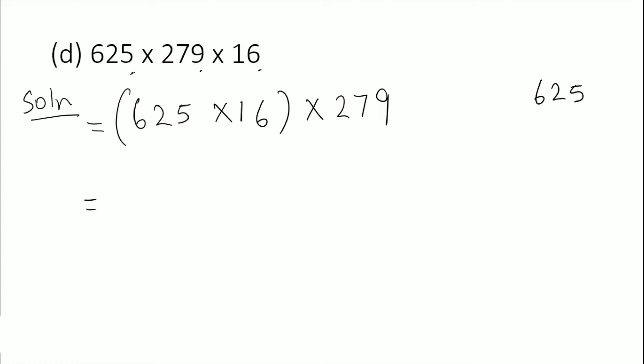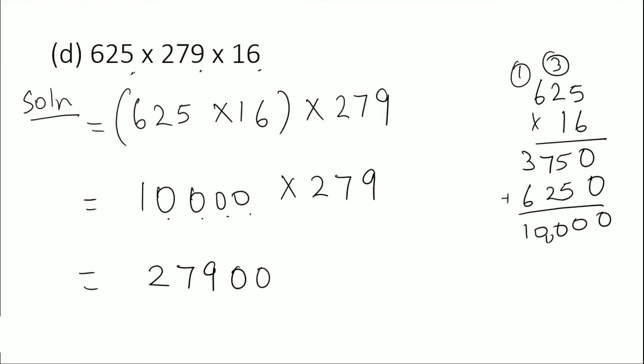Let's do the rough work: 625 times 16 equals 10,000. So we are getting 10,000. 10,000 times 279. Now it's easy to multiply: multiply 279 by 1 and add four zeros. The answer is 2,790,000. This is the answer for D.